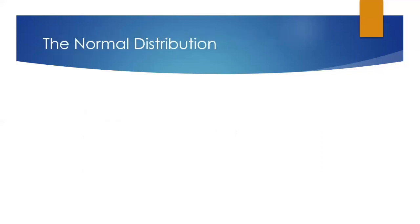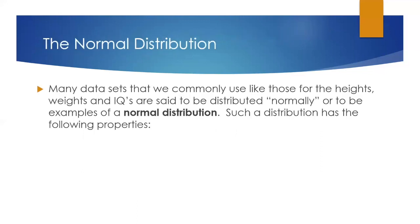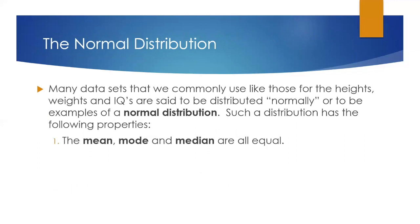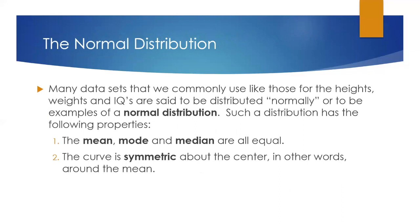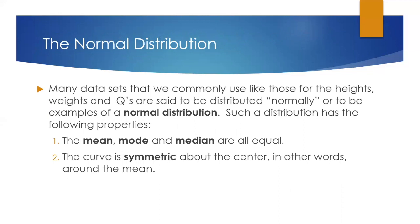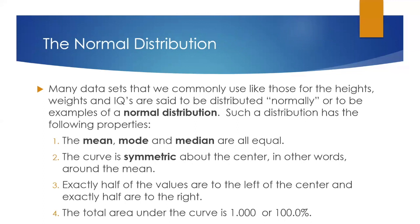Now we can talk about the normal distribution. Many data sets that we commonly use, like those for the heights, weights, and IQs, are said to be distributed normally, or to be expressed as examples of a normal distribution. Such a distribution has the following properties: the mean, mode, and median are all equal; the curve is symmetric about the center, in other words around the mean; exactly half of the values are to the left of the center and exactly half are to the right; and the total area under the curve is equal to 1.000 or 100%.